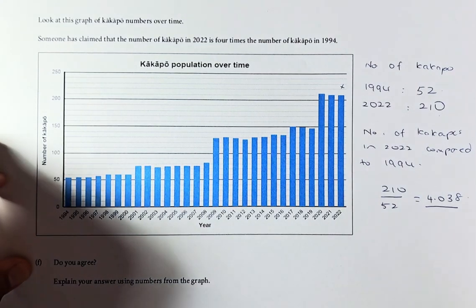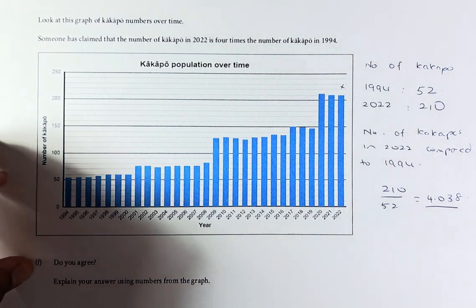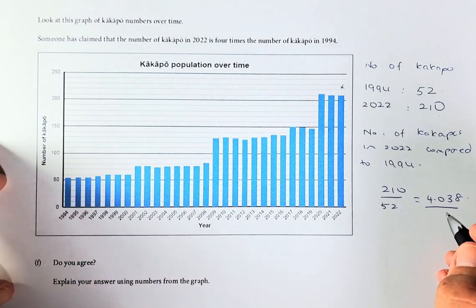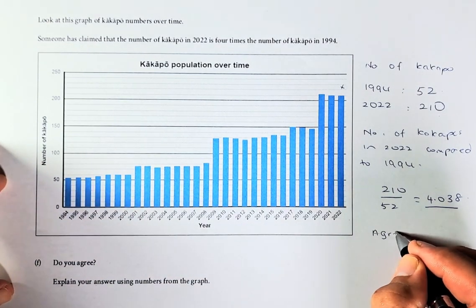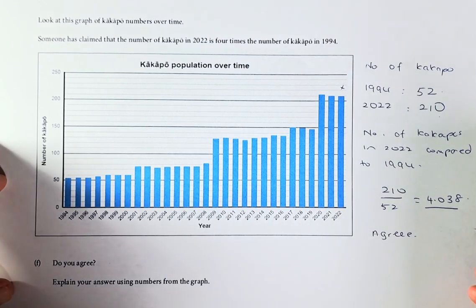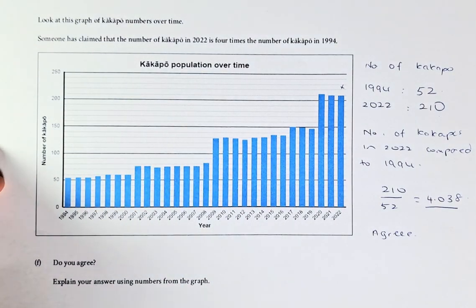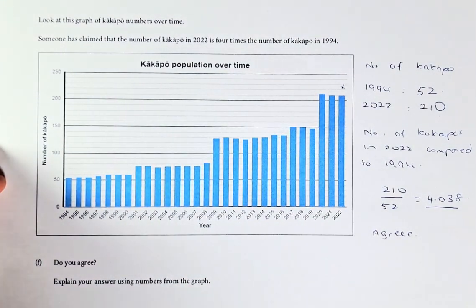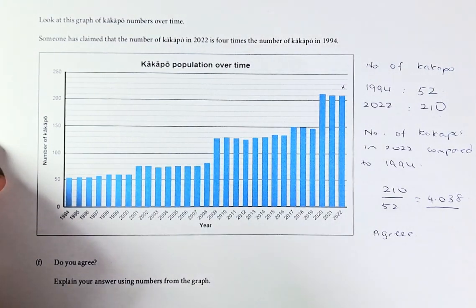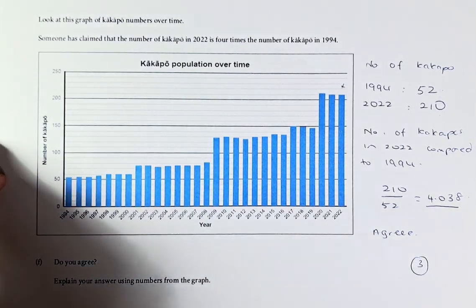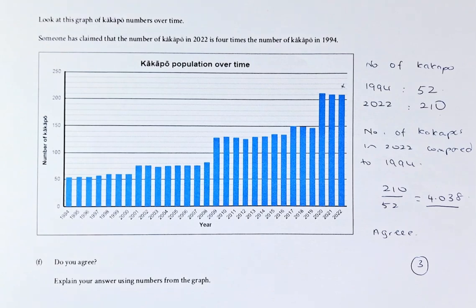This is where you answer and make a statement whether you agree or disagree. If you agree, you can say you agree because 4.038 is quite close to 4. On the other hand, if you decide to disagree, you say 4.038 is not exactly 4 — that is also acceptable. If you can answer either of these, you'll get Outcome 3 for this paper.